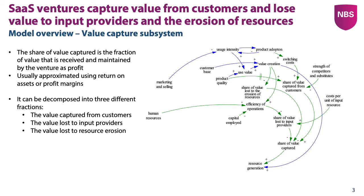We split it up into three different fractions. Firstly, we receive a share of value captured from customers, which depends on the product quality relative to competition, as well as on the switching cost that customers developed so far. We then lose a fraction of value to resource erosion, which expresses essentially amortization and depreciation as a fraction of value creation.